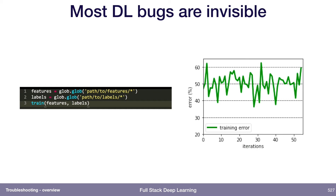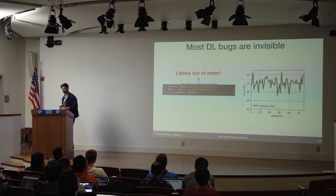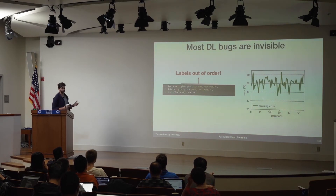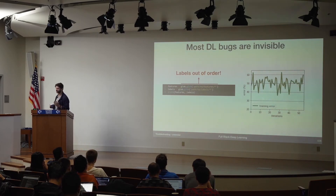One of the challenges is that there are many different things that could cause this. It could be implementation bugs, and implementation bugs in deep learning are particularly challenging because most bugs are actually invisible. This is a real example of a bug I lost a day or two to. The bug is in these three lines of code. The Python function glob actually non-deterministically returns all the files in a folder in a random order, so I was actually shuffling the labels without knowing that glob did this.